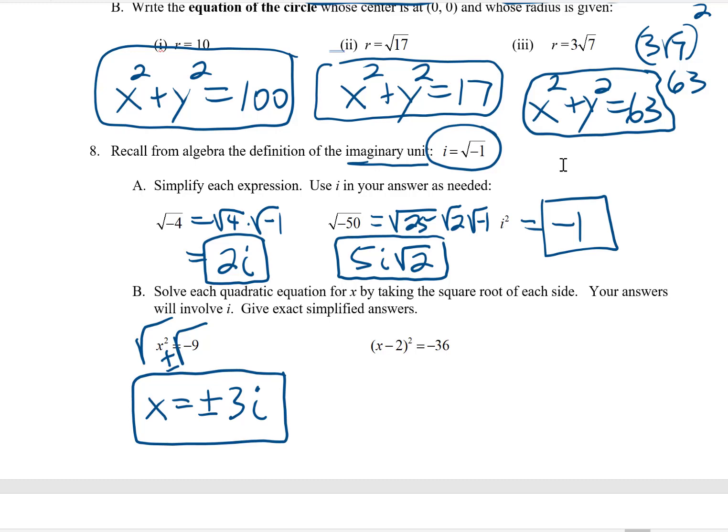I can do something similar in this second example. So square root, square root. Don't forget the plus or minus. On the left, the square root wipes out the squared. So I have x minus 2. On the right, I have plus or minus. Square root of 36 is 6. And that negative comes out as an i. And then to solve for x, all I need to do is add 2 to both sides. Final answers, x equals 2 plus or minus 6i. In other words, one answer is 2 + 6i. And the other answer is 2 - 6i.